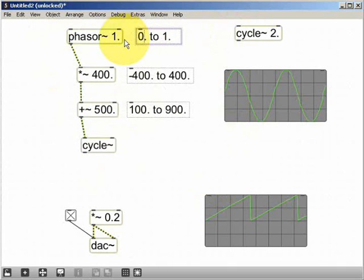As we've already seen, we actually start out with a range of values between 0 and 1. If we multiply that by 400, that will give us not minus 400, but 0 to 400. And if we then add 500 to that, we will get 500 to 900, rather than 100 to 900.